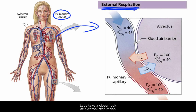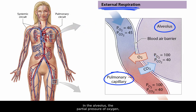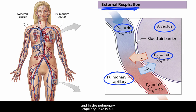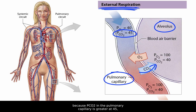Let's take a closer look at external respiration and examine the partial pressures of oxygen and carbon dioxide in a single alveolus and pulmonary capillary. In the alveolus, the partial pressure of oxygen, represented as PO2, is 100, and in the pulmonary capillary, PO2 is 40. Since the partial pressure of oxygen is higher in the alveolus, it moves from the alveolus into the pulmonary capillary. The opposite is true for carbon dioxide — it moves out of the pulmonary capillary and into the alveolus, because PCO2 in the pulmonary capillary is greater at 45, while PCO2 in the alveolus is lesser at 40.